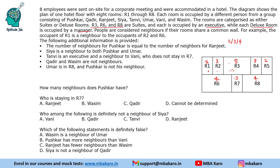Sia is a neighbor to both Pushkar and Umar, though we don't yet know where Pushkar and Umar are. Tanvi is an executive and a neighbor to Vani, who does not stay in R7. Since executives stay in suites, Tanvi can be in R3, R6, or R8.